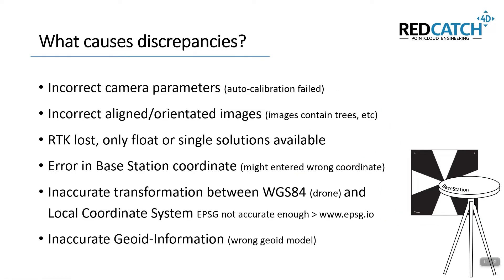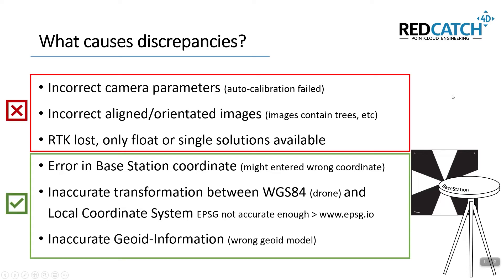What's causing the errors? There are several issues we can correct, others we can't. The first one is if the auto calibration during the orientation process fails — for example, if you get a wrong focal length — then you will get an error on your GCPs, but you have to pre-calibrate the camera to correct this. The second one is if you have a lot of trees or water bodies in images, some images might not be well oriented. And if you discover an RTK loss, float, or single solution only, you might have to perform the flight again or use traditional GCPs.